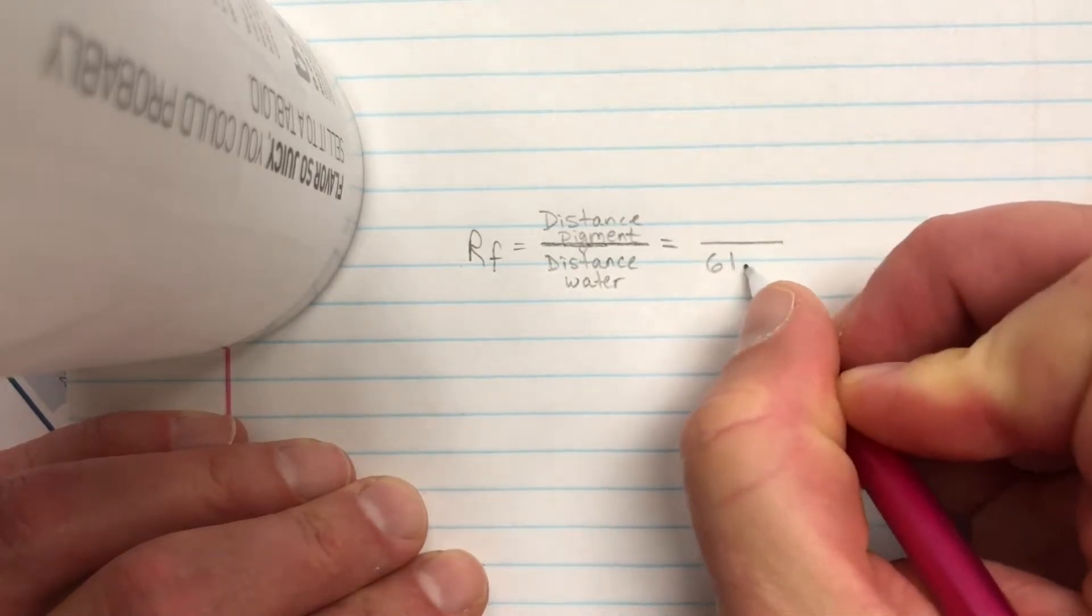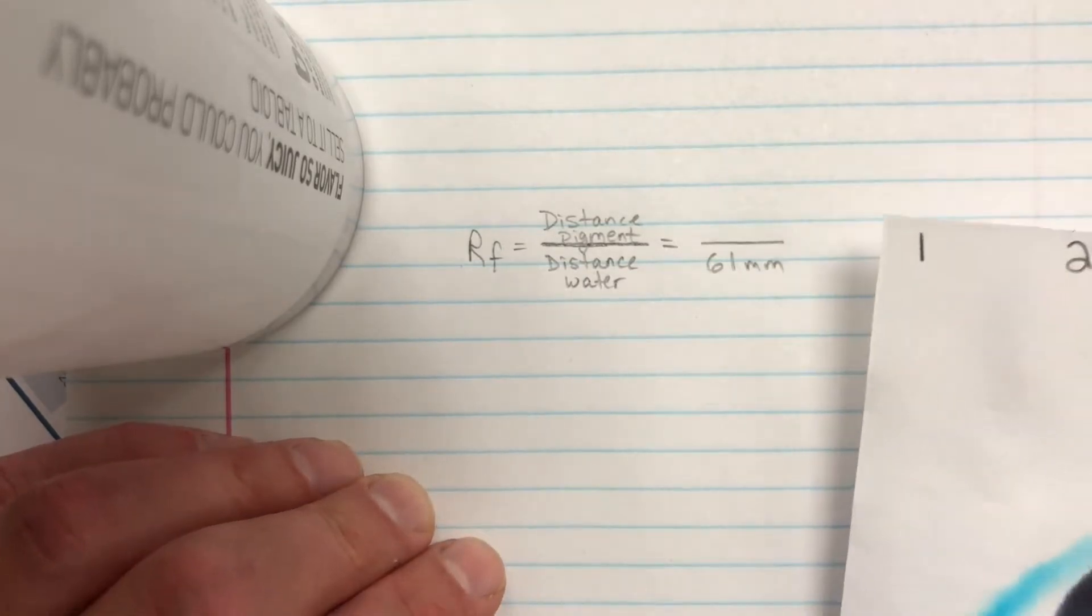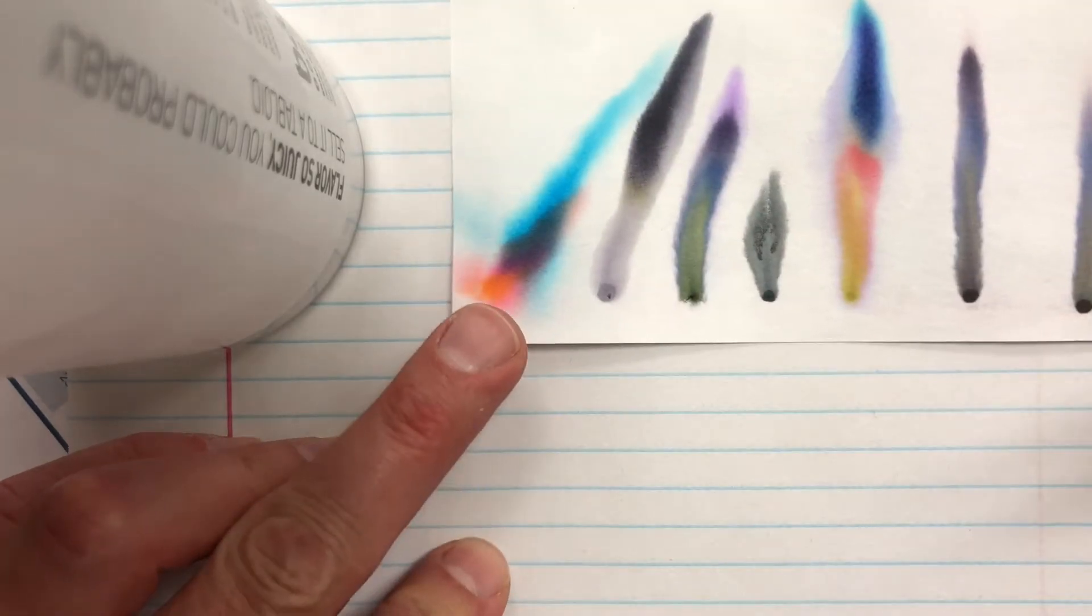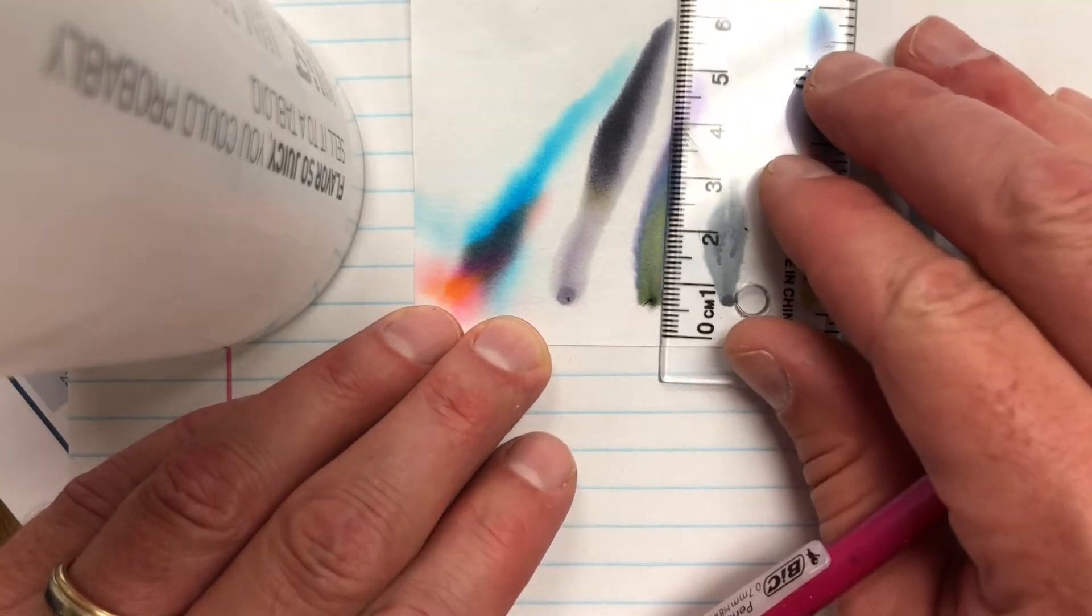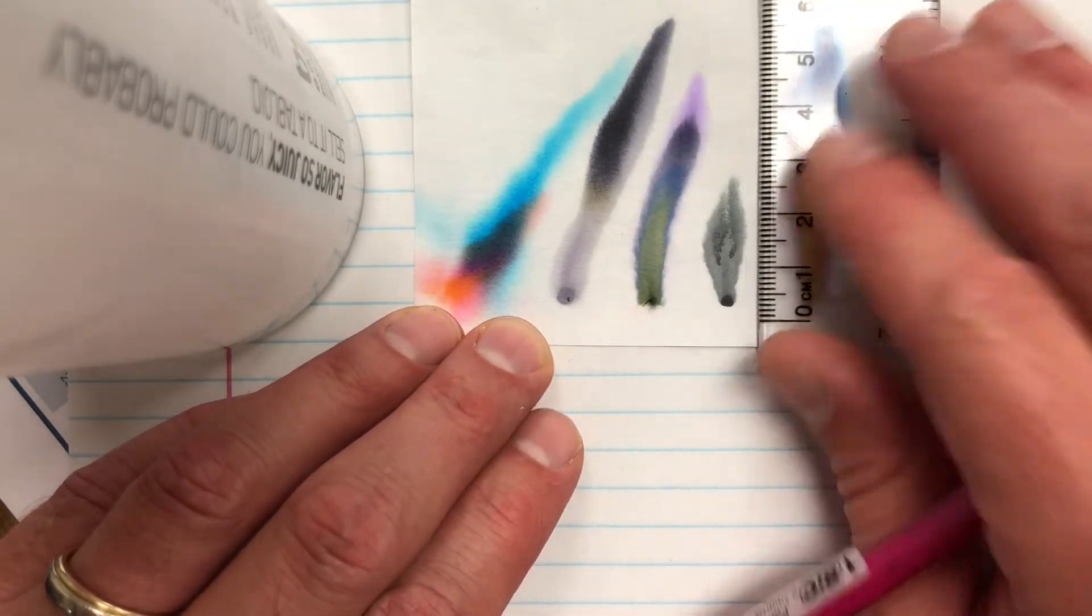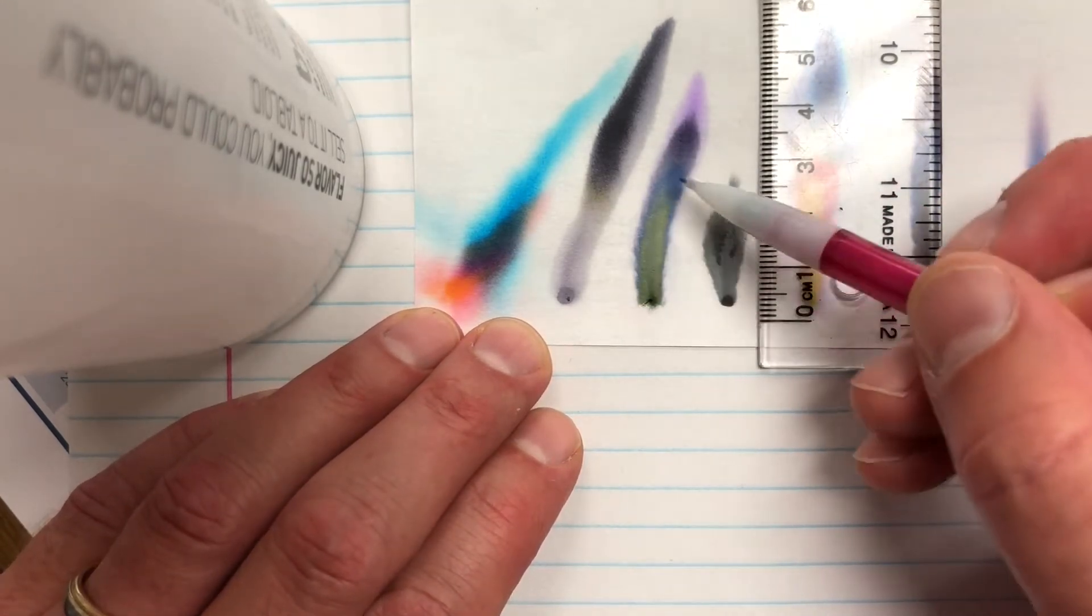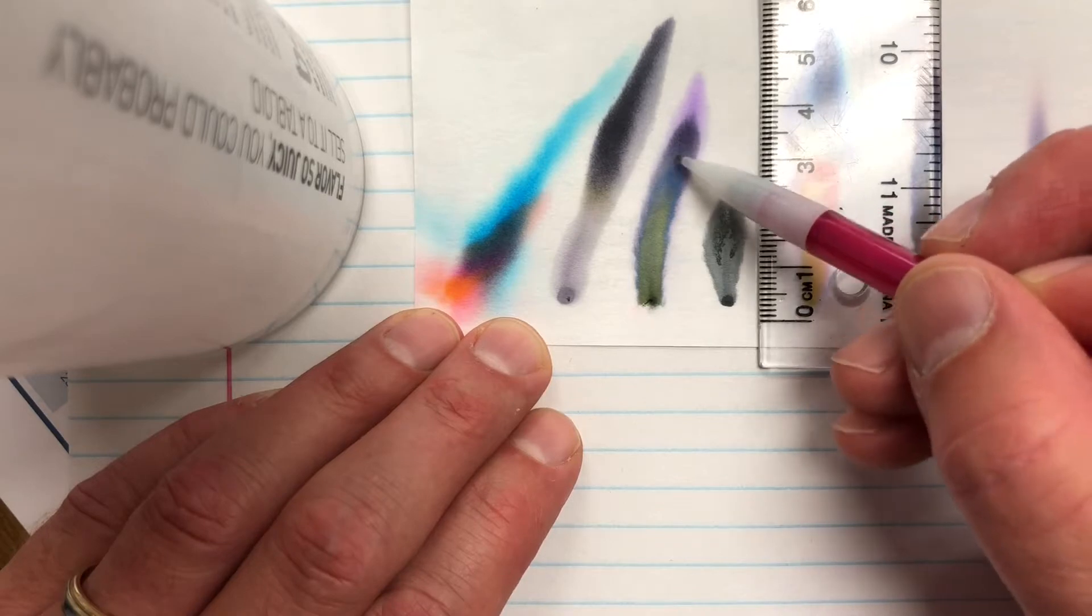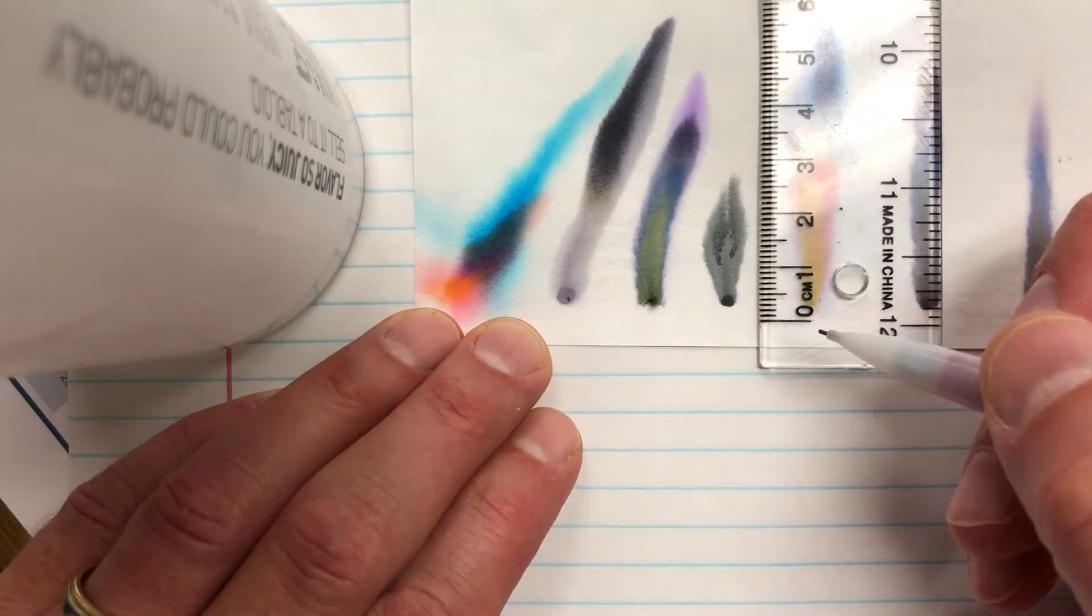And I'm going to go and figure out what the very first color RF value is. So if I look, you'll see I see three, actually four colors: I see a yellow, a blue, a dark purple, and a light purple. So I have four colors that I'm going to find RF values for.